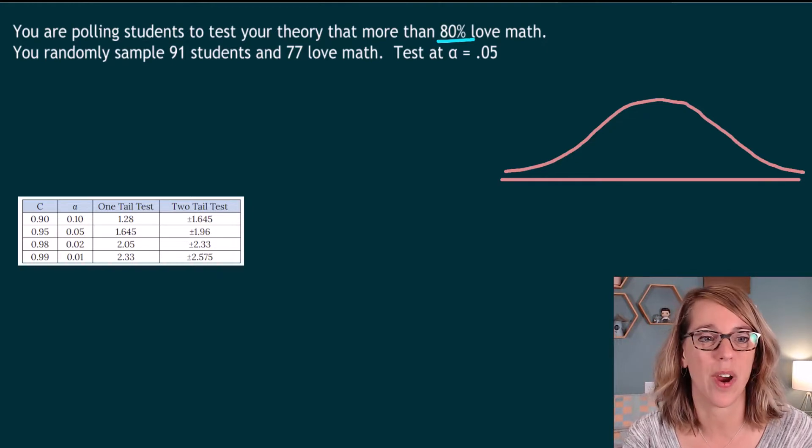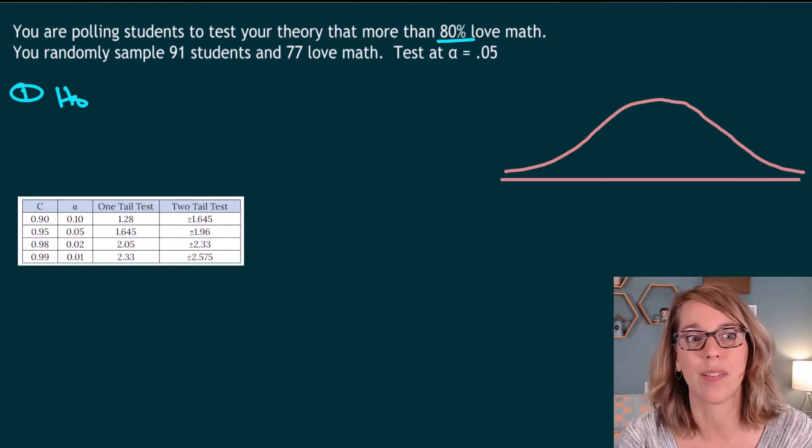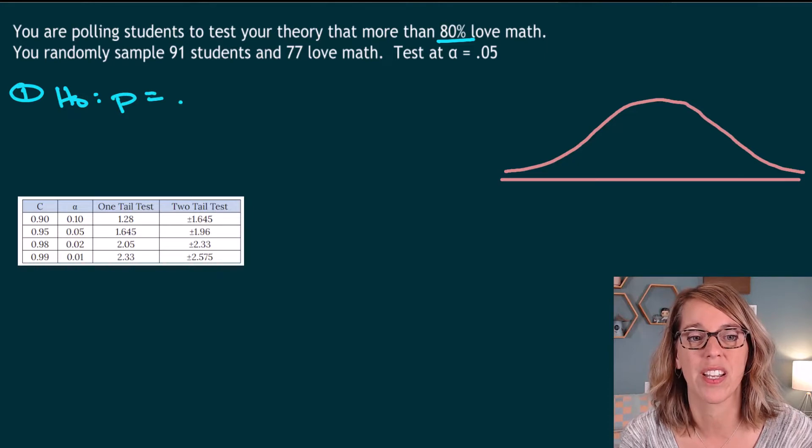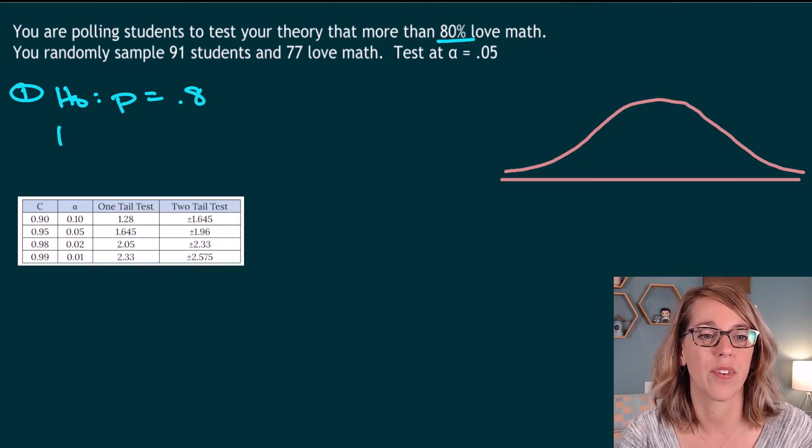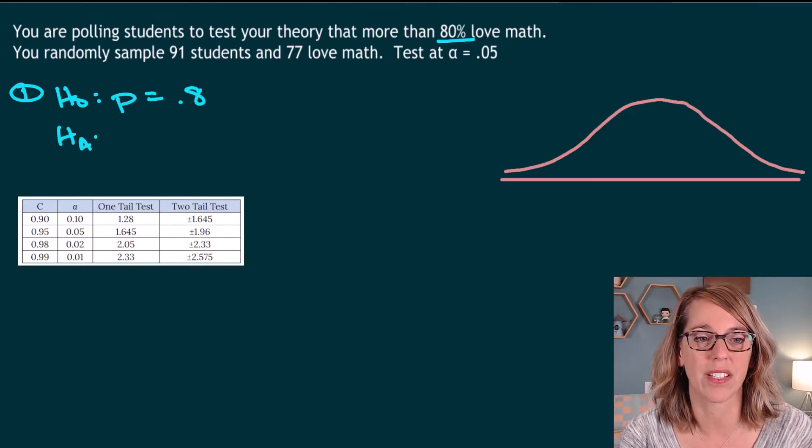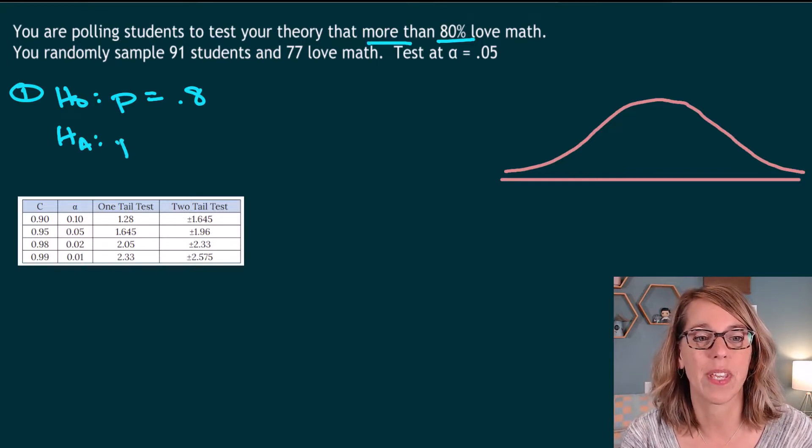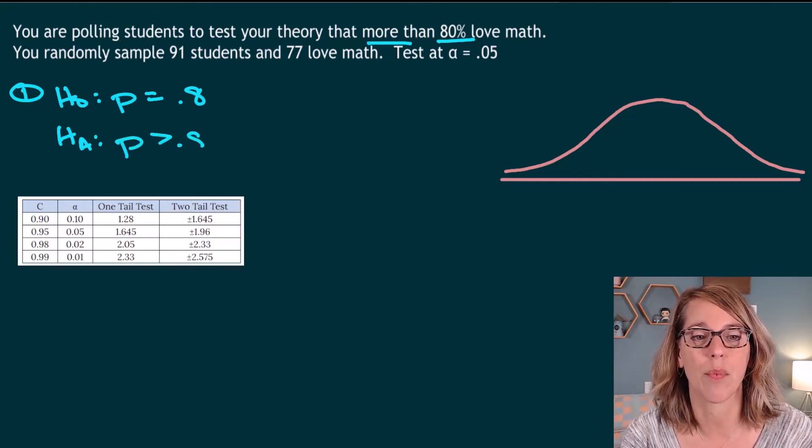I'm going to put this 80% into our hypothesis. So for step number one, my null hypothesis would be the answer is about 80%. So we're going to say that P for the proportion is 0.8. And for our alternative hypothesis, I'm going to use that language more than, and I can say that P is greater than 0.8.